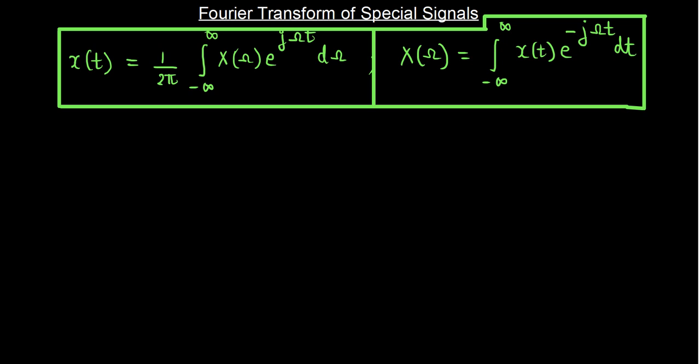If we recapitulate, the conditions for the convergence of the Fourier series were known as the Dirichlet conditions. Similarly here, the conditions for the existence — or convergence — of these integrals are also called convergence conditions.